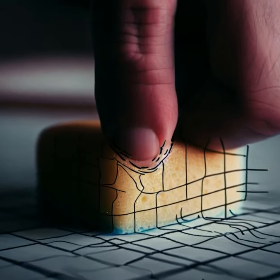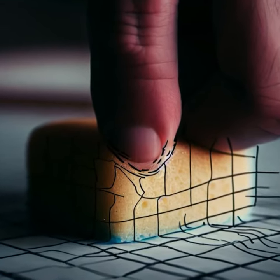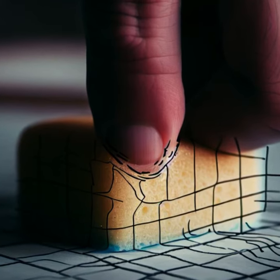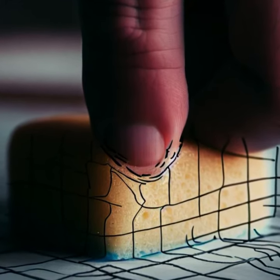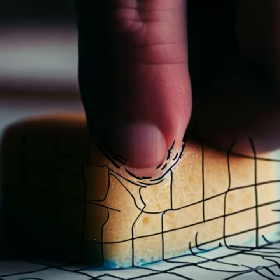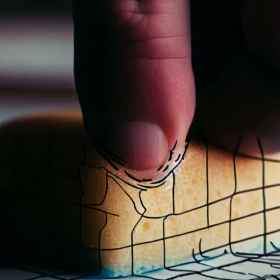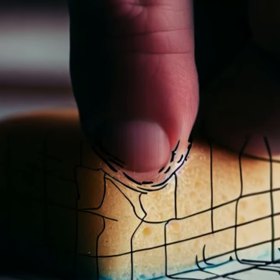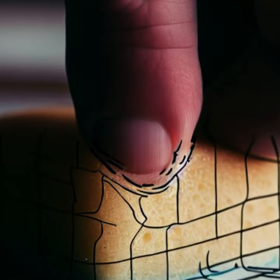The grid on the sponge: the grid you've drawn on the sponge will start to deform near the pinch point. Lines that were once straight will now curve towards the pinch. This represents how the paths of objects, including light, will curve when they come close to a black hole due to the warping of space-time.